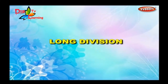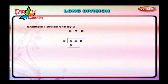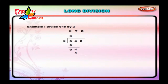Long division. Example: Divide 648 by 2. Step 1: Arrange the numerals in place value order. Step 2: Divide 600 by 2. 6 hundreds divided by 2 is equal to 300. Write 3 in the hundreds place in the quotient. Step 3: Bring down 4 tens. Divide 4 tens by 2. 4 tens divided by 2 is equal to 2 tens. Write 2 in the tens place in the quotient. Step 4: Bring down 8 ones. Divide 8 ones by 2. 8 ones divided by 2 is equal to 4 ones.